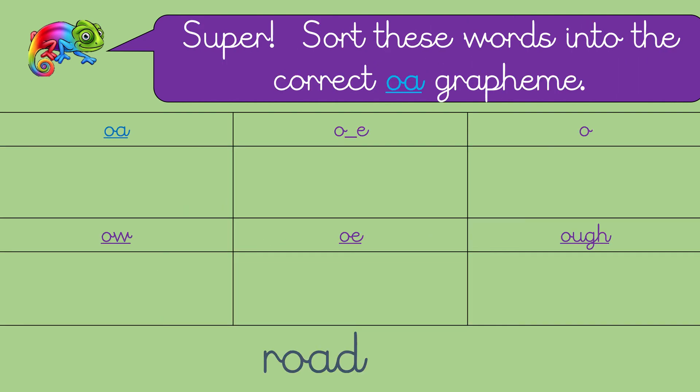Super! Sort these words into the correct grapheme. What's this word? That's right, it's the word 'road' and where does it need to go? That's right, o and an a. What word's this one? Brilliant, it's the word 'home' and how do we spell the o in this word? Super, it's the split digraph. What's this one? Yeah, it's the word 'only' and what makes the o sound in this word? That's right, it's the o by itself.